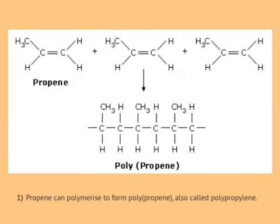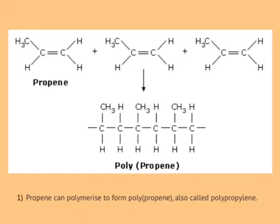Another example of polymerisation is where many propene monomers join together to form a long chain. Notice the change of name: rather than polyethene, this one is polypropene because it has that extra carbon for each monomer unit.